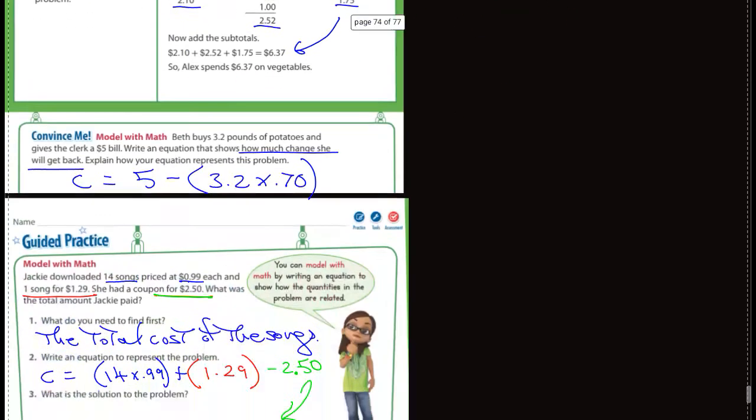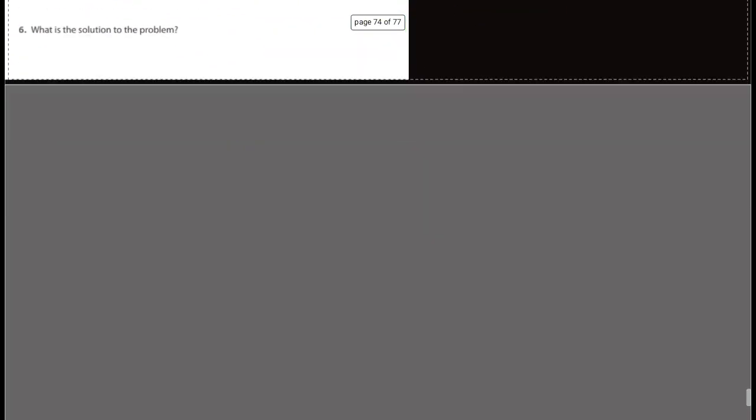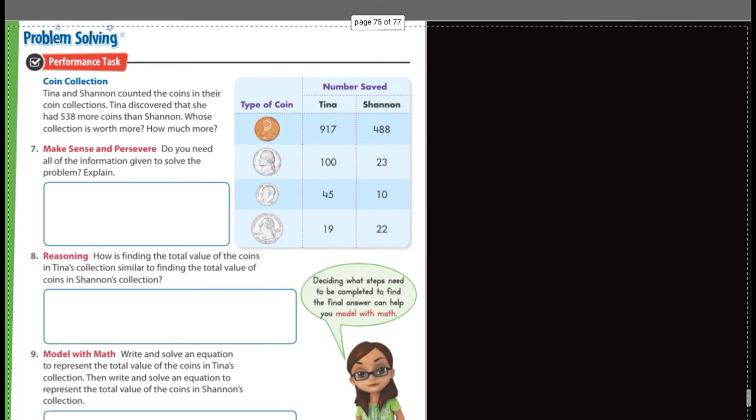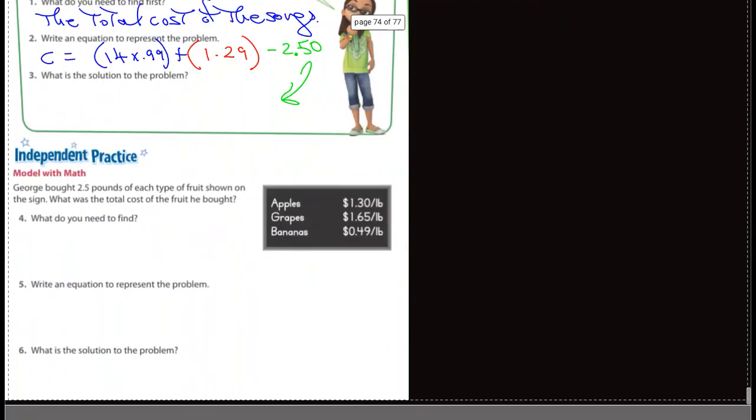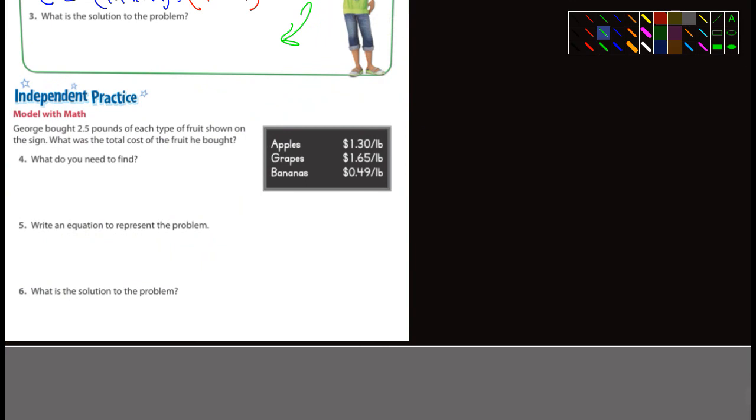Let's see here. Independent practice. George bought 2.5 pounds of each type of fruit shown on the sign. What was the total cost of the fruit he bought? I'm going to let you guys do that one. 2.5 pounds of each one, of apples, of grapes, of bananas. Write an equation to represent the problem. Let me see what kind of equation you guys came up with. And what's the solution to the problem? I'm just going to let you guys do that one on your own.